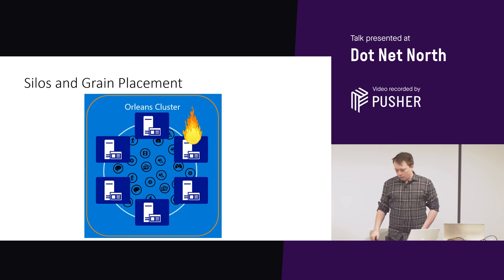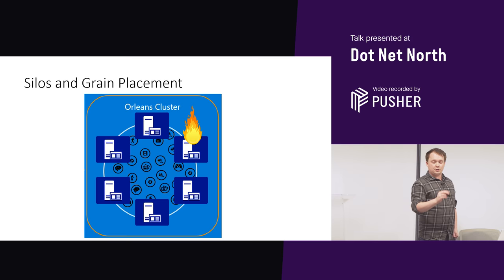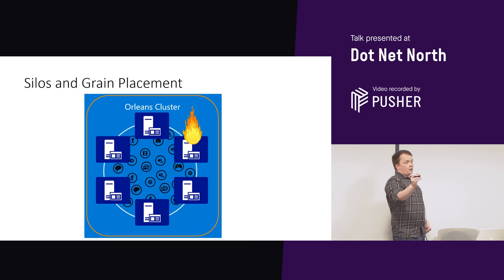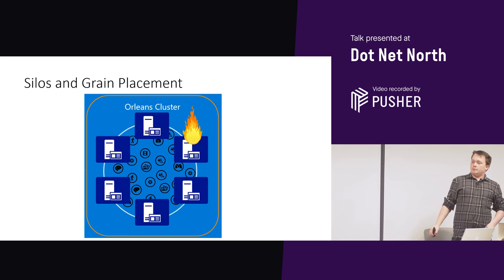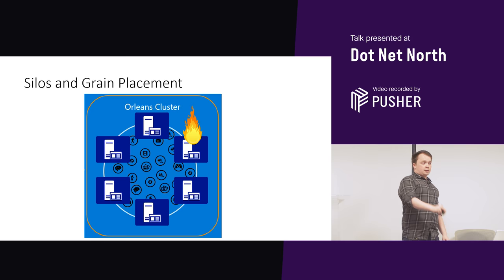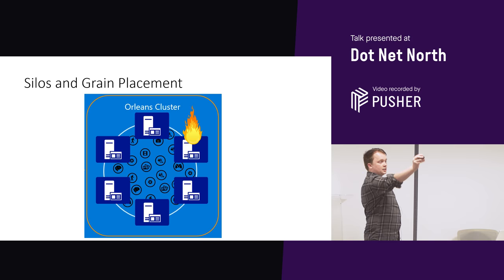We're going to move away from grain implementation and code now and look at some diagrams. Orleans Cluster — this is how we do scalable. We have our individual silos here — this is just your service. When you get a grain, when you say grain factory, get me a grain, it will just randomly create it on one of these silos. There are ways to target a specific silo but the standard default behavior is just anywhere. So get me an auction grain — it appears up here. Get me a bidder grain — it appears here. Notice it's on fire.